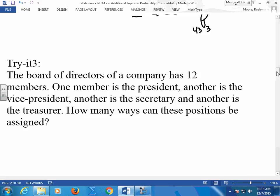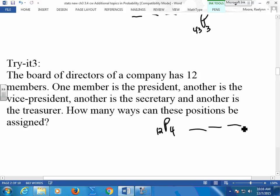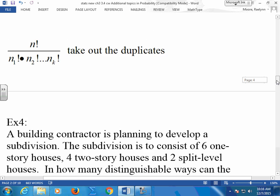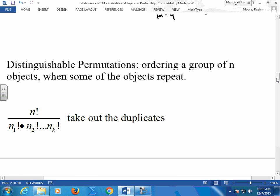So a board of directors has a company that has 12 members. One member is selected as president, one for vice president, one for secretary, one for treasurer. How many ways can these positions be assigned? Give me a P statement. 12P4, 12, 11, 10, 9. So are we all seeing this? They give you enough permutations that you can kind of get the hang of it. Here's the one that's a little different.